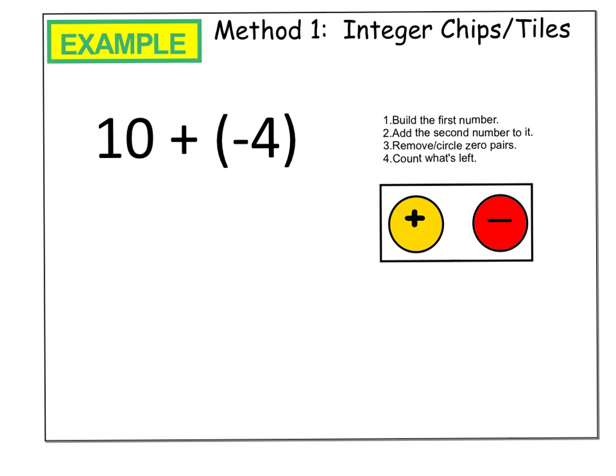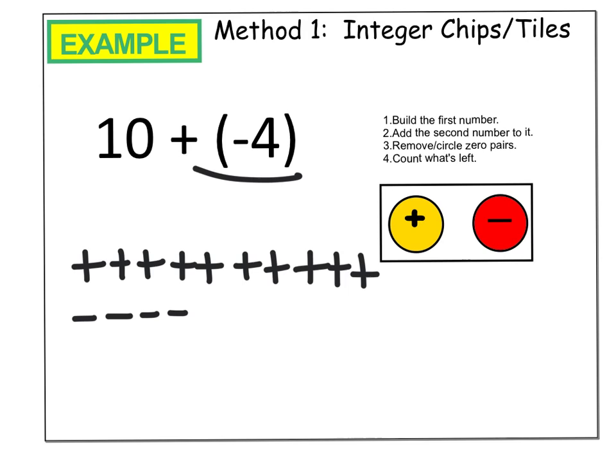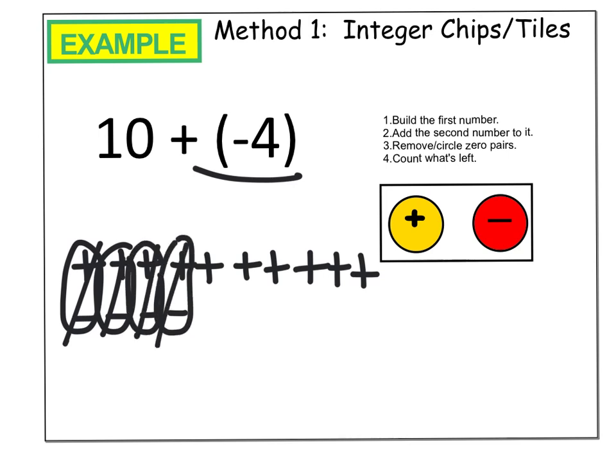Let's take a look at one final example with tiles. So I build my first number: 1, 2, 3, 4, 5, 6, 7, 8, 9, 10. And then it tells me that I'm adding four negatives. I like to kind of write them below because it'll help me when I make my zero pairs. So I added four negatives, make zero pairs, cancel those out. Every time I see a positive and a negative I know that that cancels out. And then again I count up what's left: 1, 2, 3, 4, 5, and 6. And this time they're positives, so we end with an answer of positive 6.